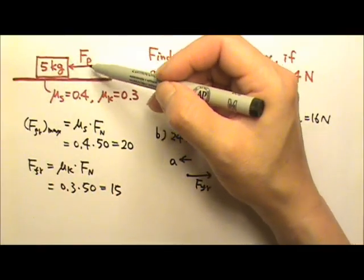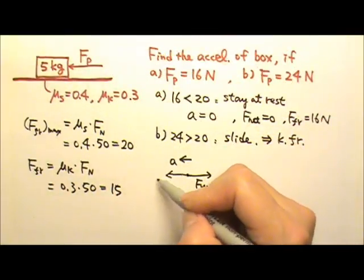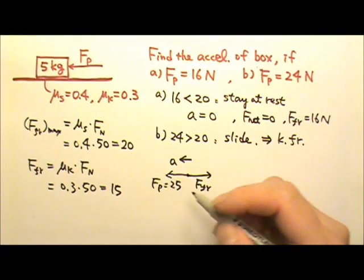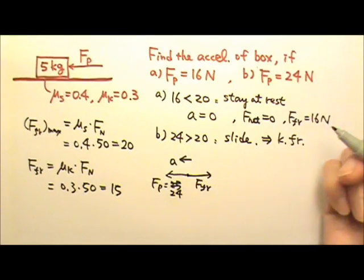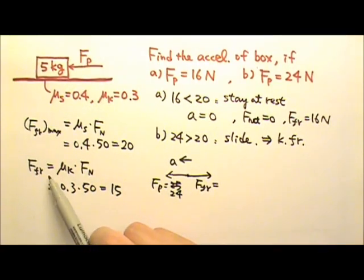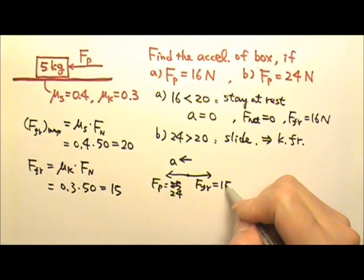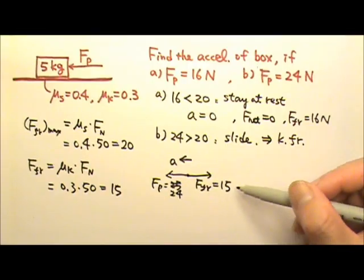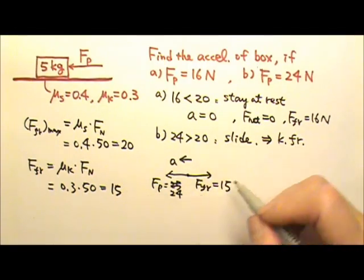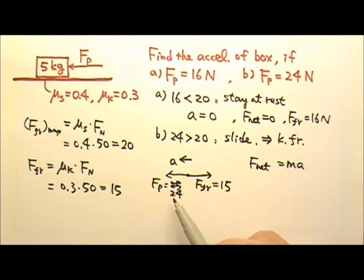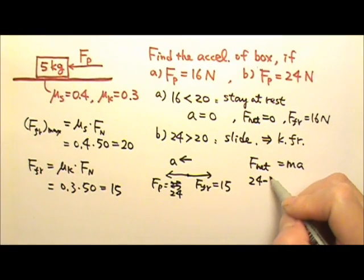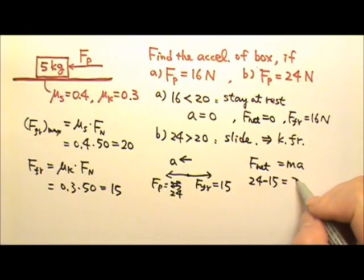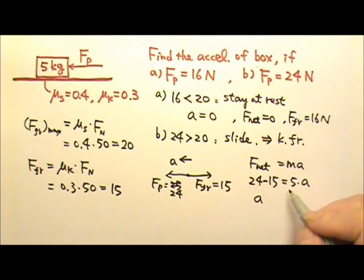The pushing force is 24. And friction, the kinetic friction is always the same. So this is 15. No matter how hard you push, if it's sliding, the kinetic friction will be the same value. So to write the net force equals to Ma, the bigger side minus the smaller side gives you the net force. 24 minus 15 equals to M is 5 times the acceleration. So this is 9 equals to 5a. The acceleration would be 1.8 meters per second squared, and that goes to the left.